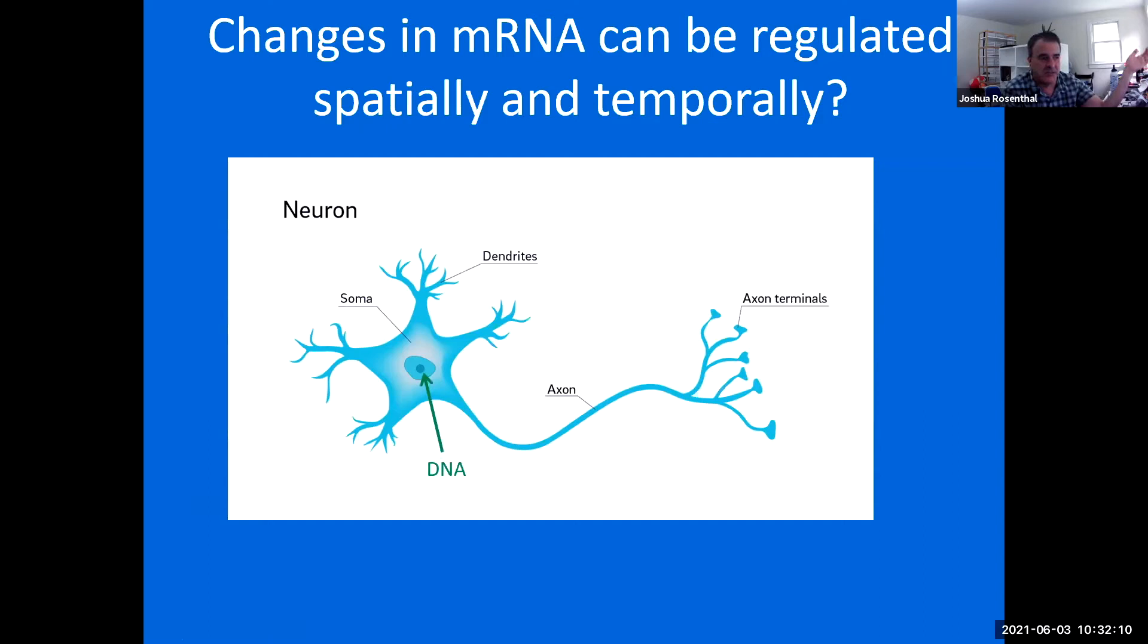Your DNA is sequestered in the nucleus. The same information in the DNA is then spread out in the proteins that are encoded by it all across the nerve cell or all across any cell for that matter.